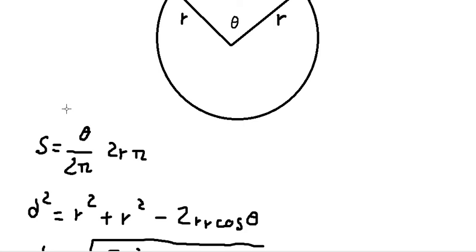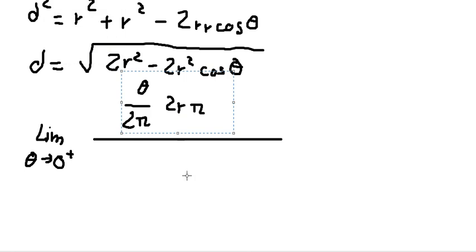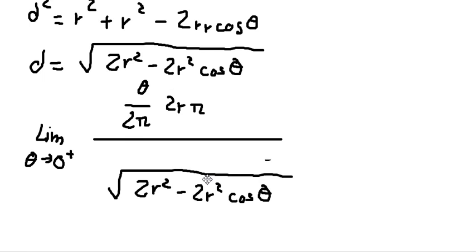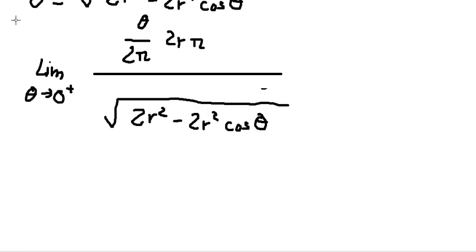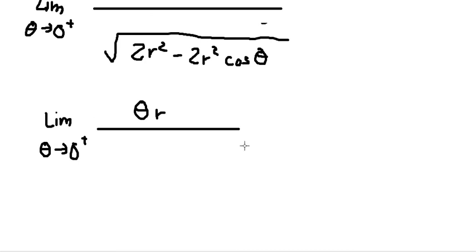So h equals r times theta, and d equals the square root of 2r squared minus 2r squared cosine theta. We simplify h: the 2 and 2 cancel, leaving us with r times theta. For d, we can factor out 2r squared from inside the square root.